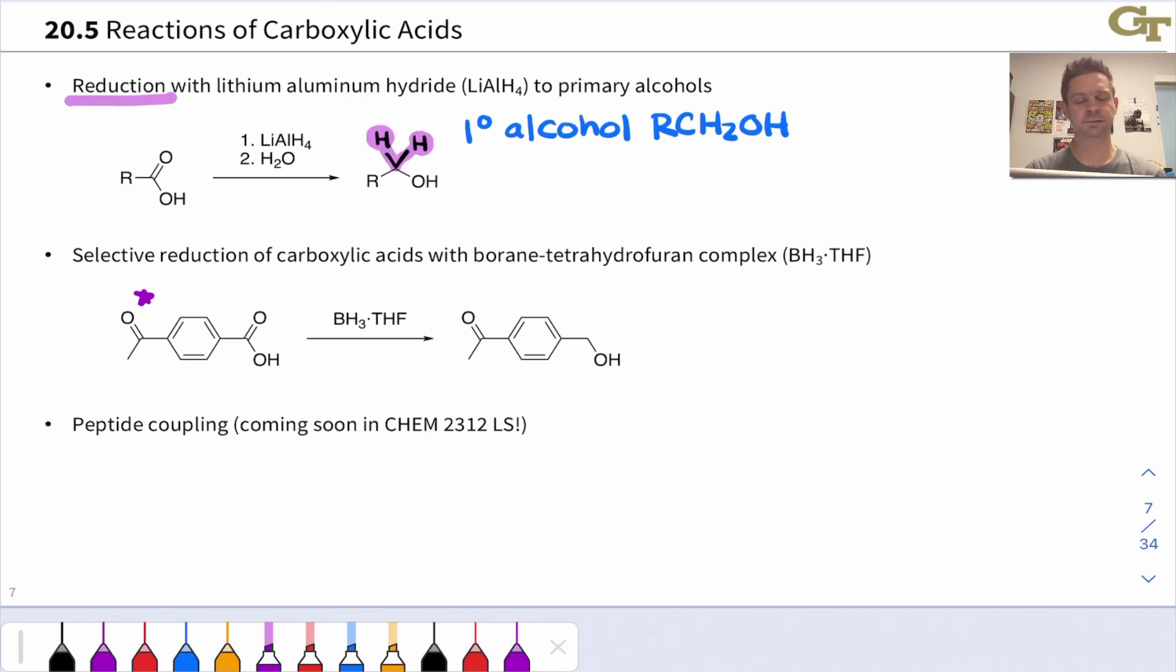It's possible to selectively reduce carboxylic acids in the presence of ketones and other carbonyl containing functionality using borane-tetrahydrofuran complex, which is commonly abbreviated as BH3-THF. I won't get into the details on this reaction. It's just a really nice way to chemoselectively reduce the carboxyl group to a primary alcohol.